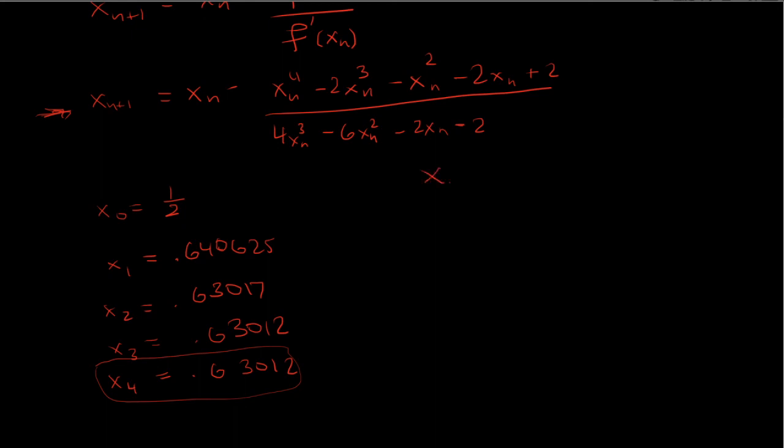And if we start with x zero being two and a half for x one we'll plug in two and a half in for all the x sub n's so that'll be 2.5799.